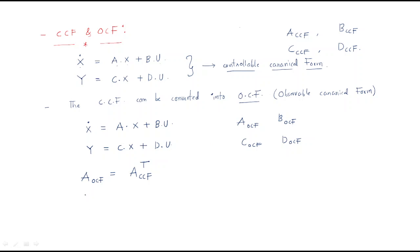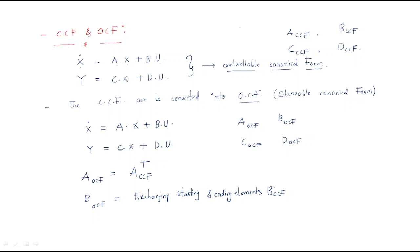For matrix B, we make a small change. The Observable Canonical Form B is obtained by exchanging the starting and ending elements of the Controllable Canonical Form B. B is generally the input matrix — it provides the input information for the CCF. Just exchange the starting and ending elements.